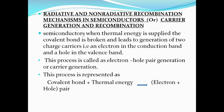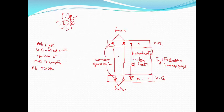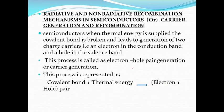To semiconductors, when thermal energy is supplied, covalent bonds will be broken, leading to generation of two charge carriers. Electrons are generated in the conduction band and holes are created in the valence band. This process is called electron-hole pair generation, or carrier generation.